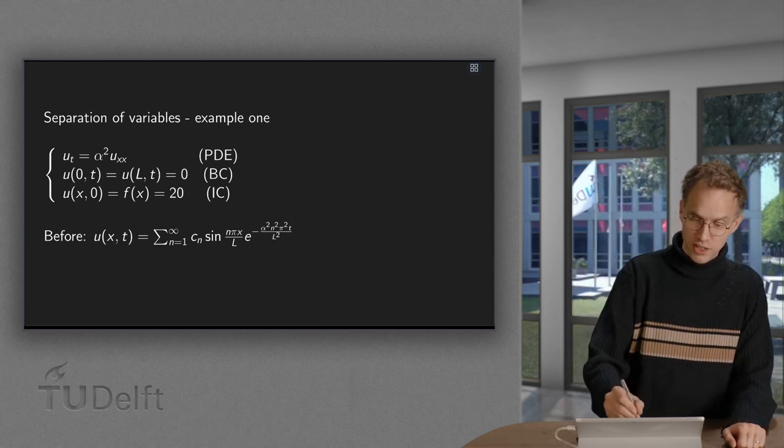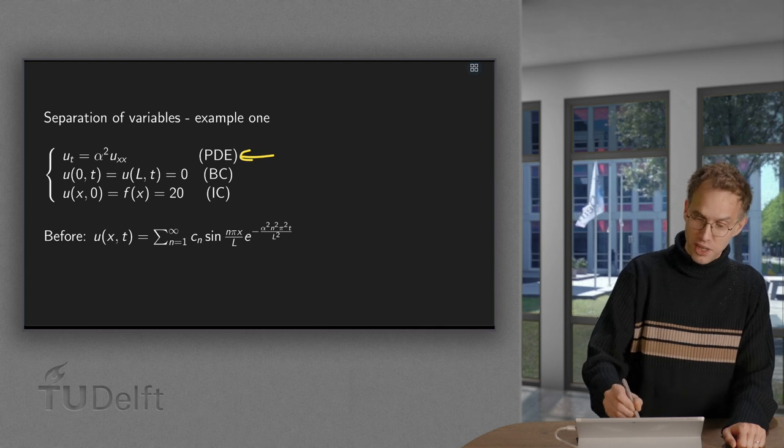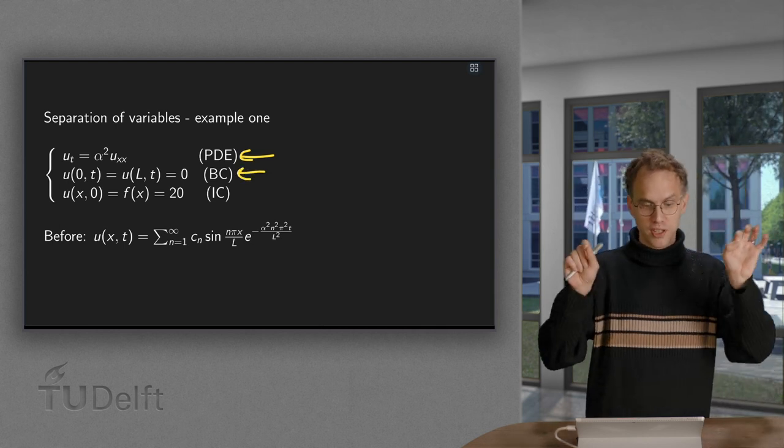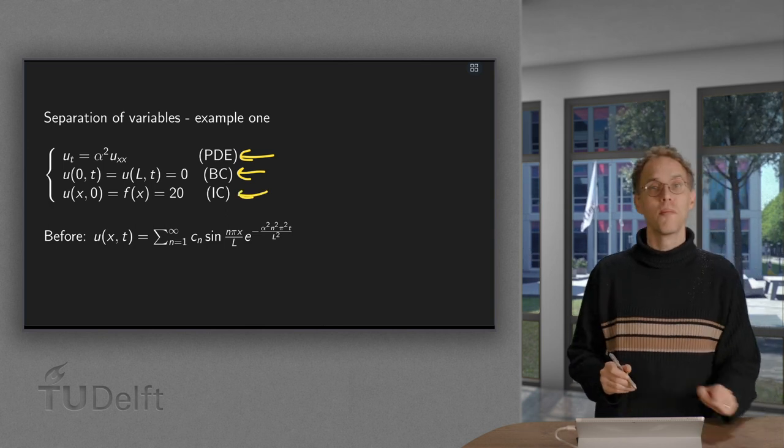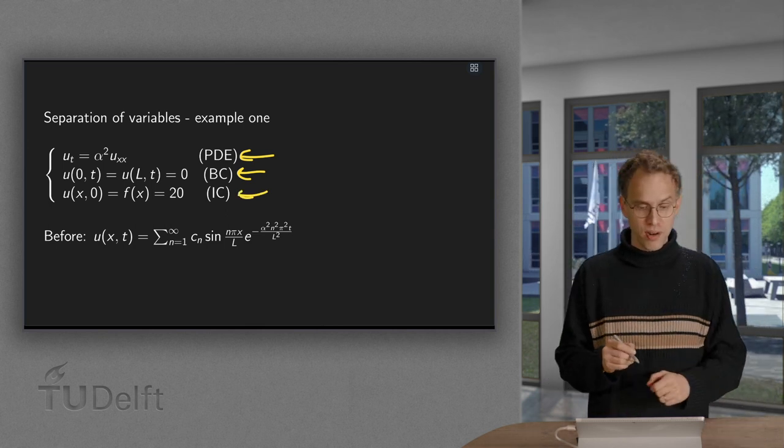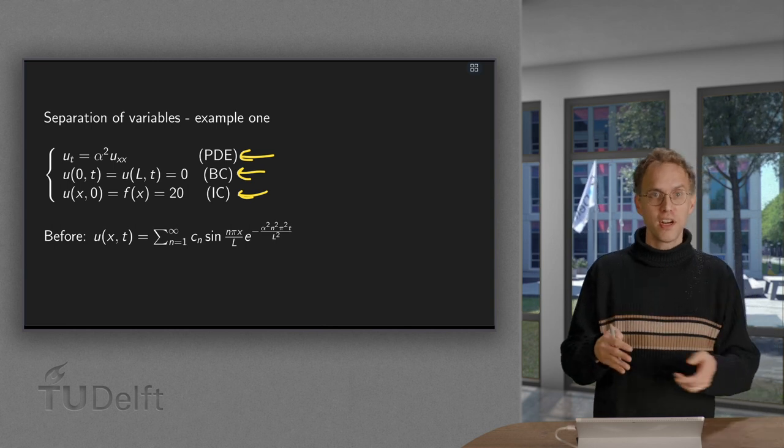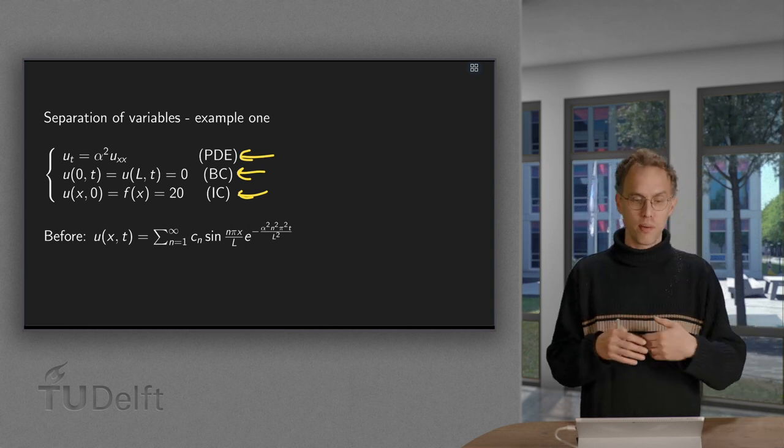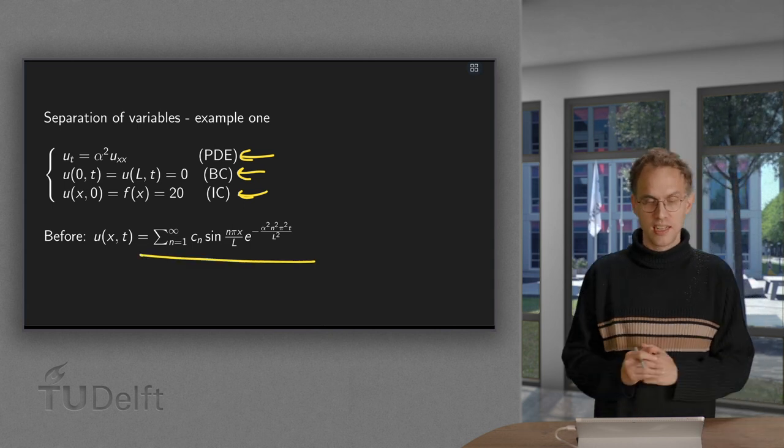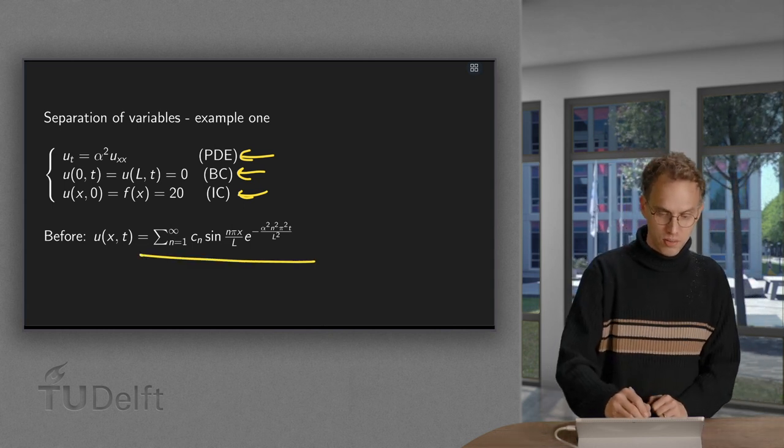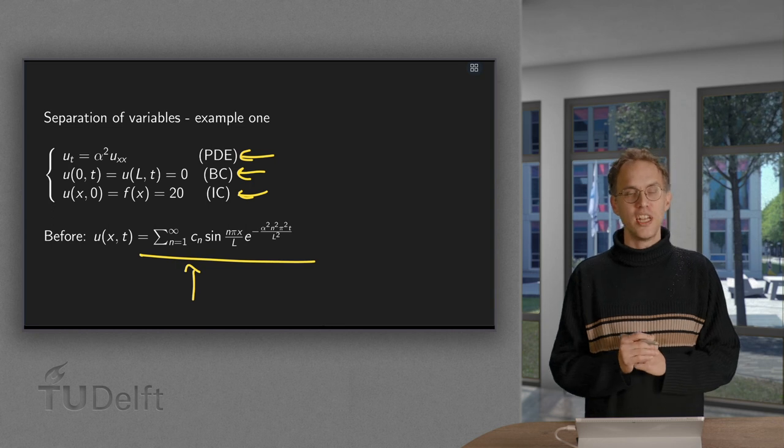So here we have our heat equation, our PDE. Dirichlet boundary conditions, so zero temperature at the boundary, and initial temperature of 20. And as you have seen before, we can use separation of variables, solve the boundary value problem and so forth. And our solution then finally looks like this, and we only have to determine the coefficient cn.